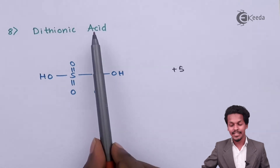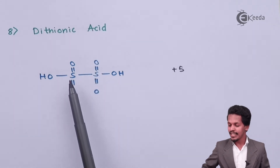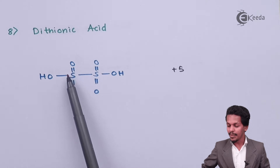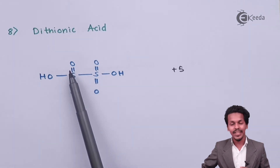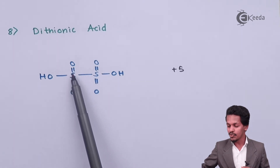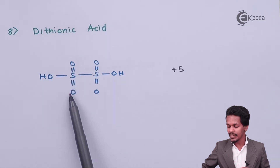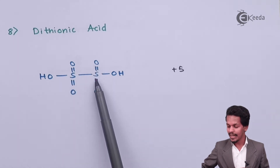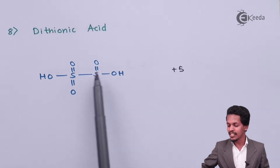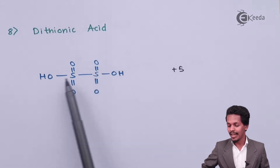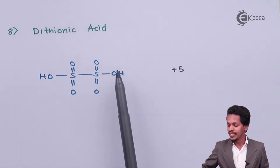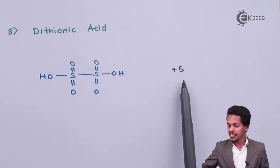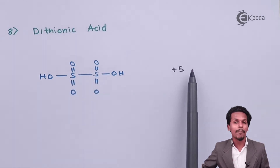The next is dithionic acid. In this structure there are four S=O (sulfur double-bonded to oxygen) groups, and the remaining two valencies are satisfied by OH groups. The oxidation state of sulfur is +5.